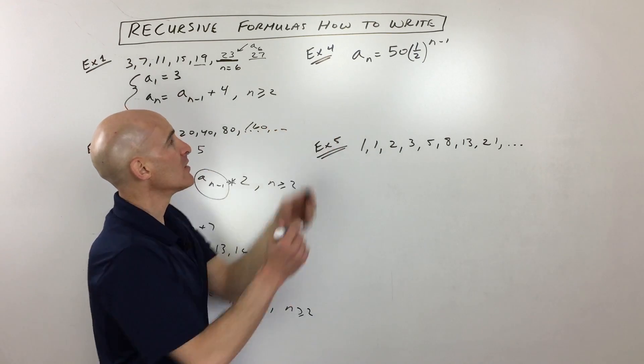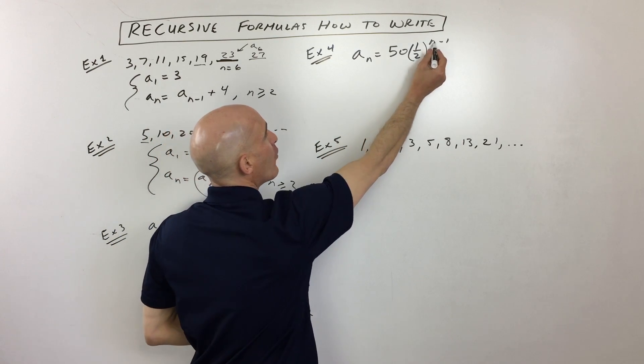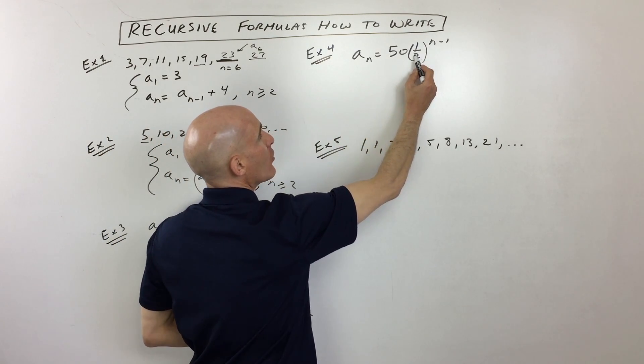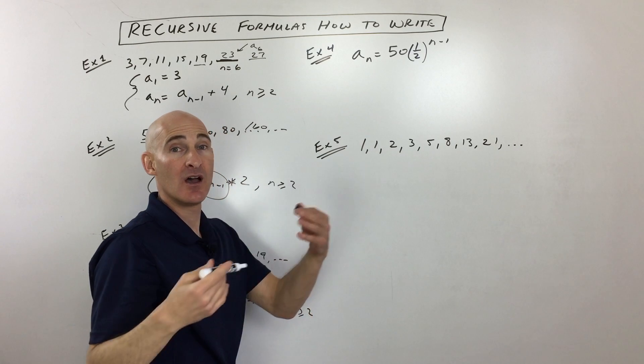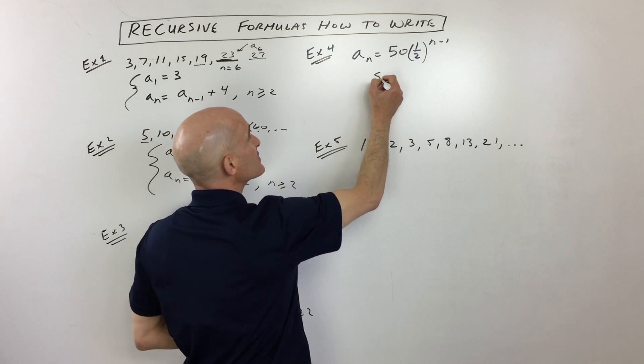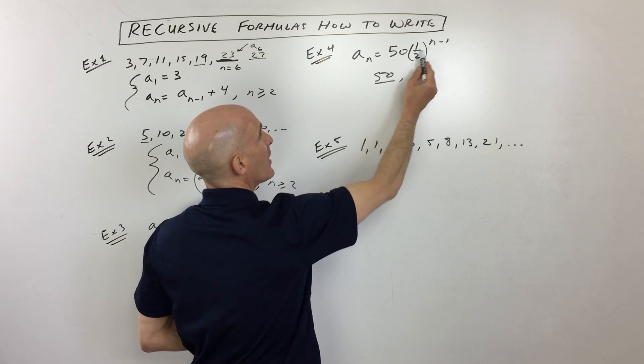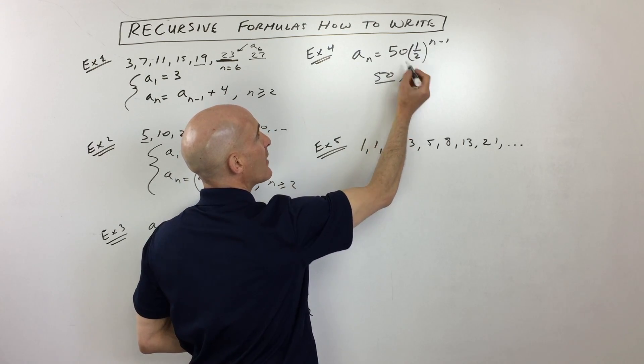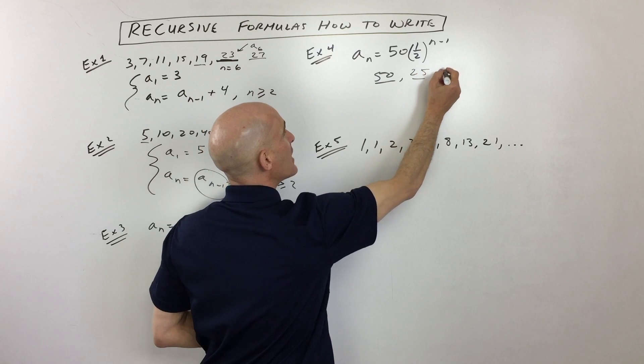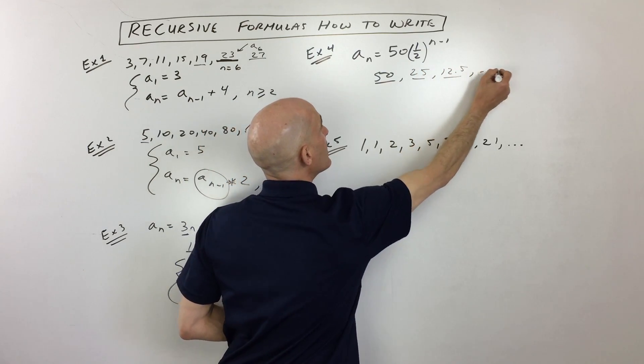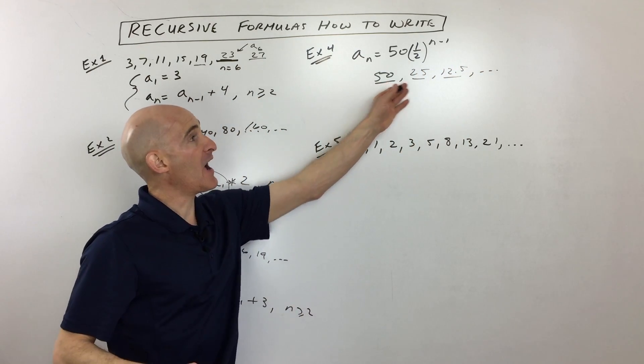But to go back to this problem, let's just write out a few of the terms. So if I put 1 in, 1 minus 1 is 0. 1 half to the 0 power is 1 times 50 is 50. So our first term is 50. If we put 2 in, 2 minus 1 is 1. 1 half to the first power is 1 half times 50 is 25. And you can see we're off and running now.